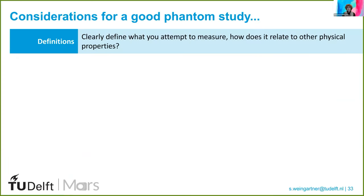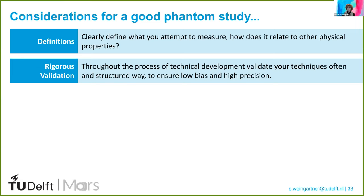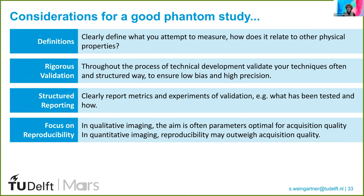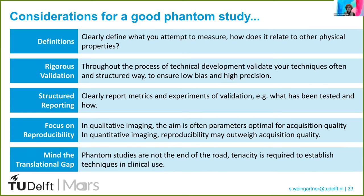To sum up, I want to conclude with a few recommendations on how to do a good phantom study. First, clearly define what you attempt to measure. Think about how this measurement is related to other physical properties and how it can best be ascertained as a reference value. Throughout the entire process, perform rigorous validation at every step, repeatedly assessing bias and precision to ensure no step compromises your measurement quality. Be very structured in your reporting and clearly tell the reader what has been tested, what has been constant, and what has remained the same. In quantitative imaging, the focus may be put on reproducibility rather than image quality. Keep in mind that phantom studies are not the end of the road — a lot of tenacity and work is needed to bring it all the way through translation.